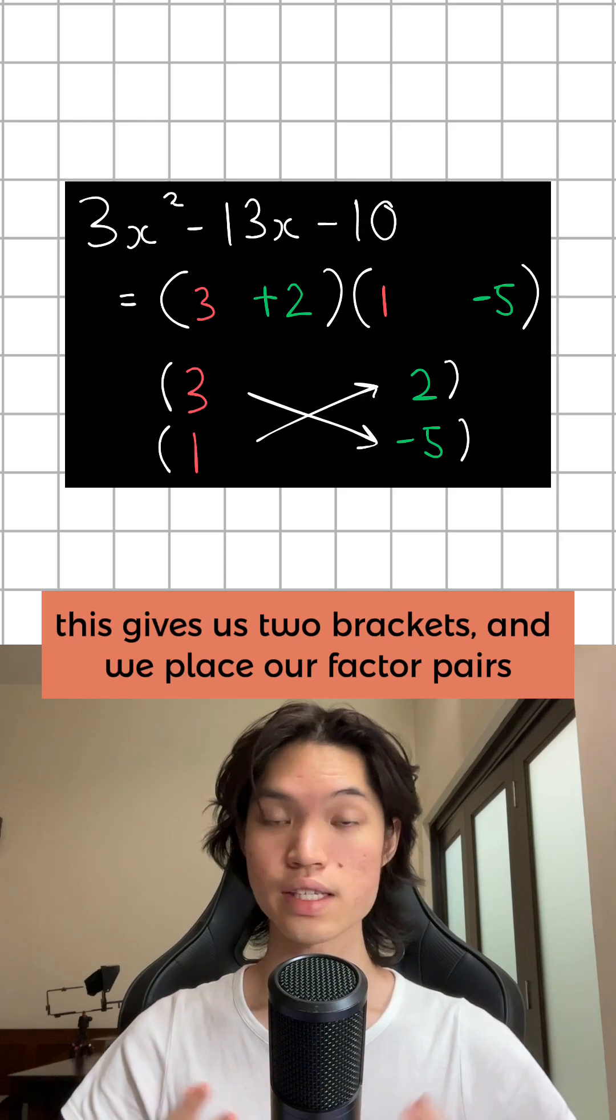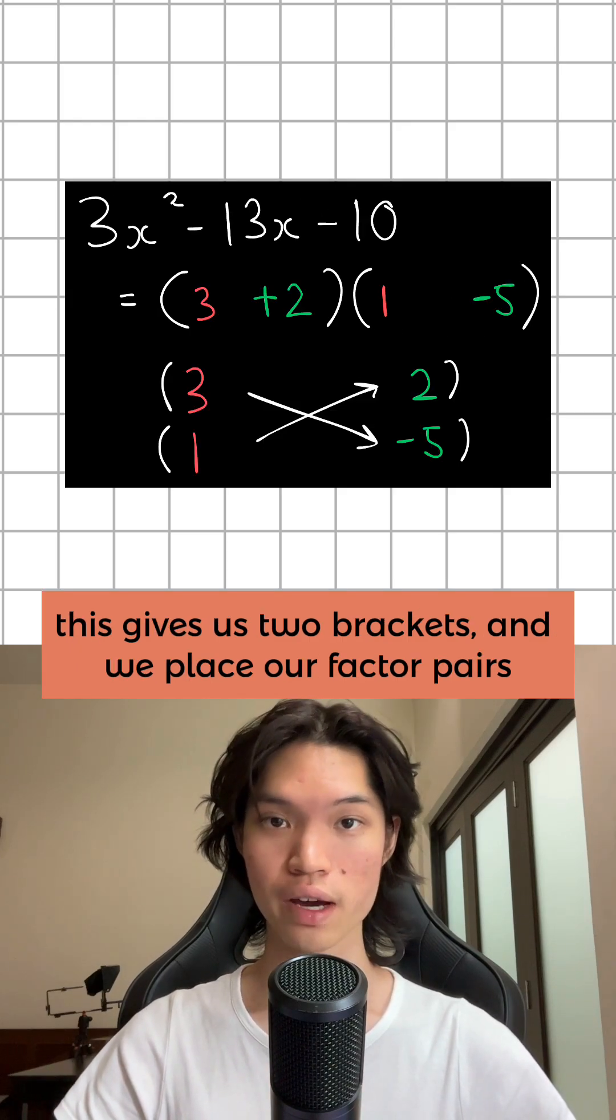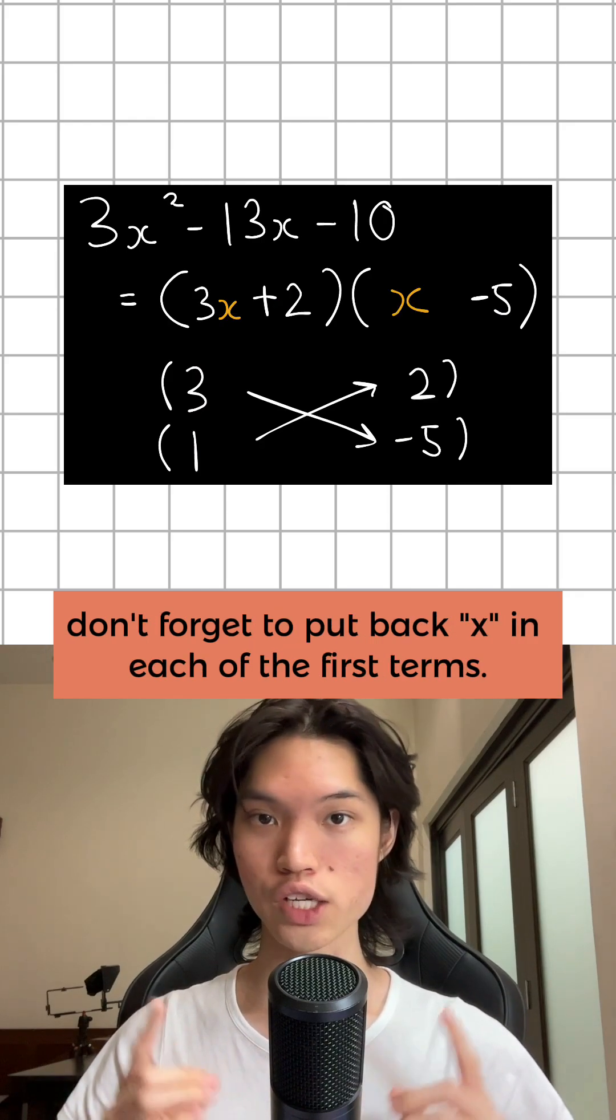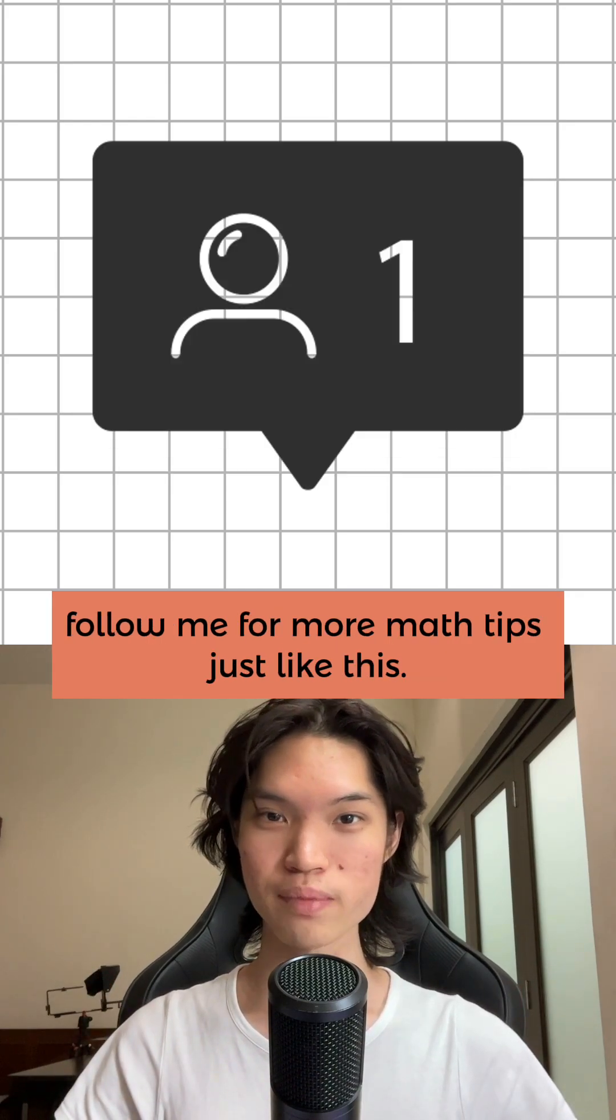Step 3 is to write out the answer. This gives us two brackets and we place our factor pairs according to the cross method we did earlier. Don't forget to put back x in each of the first terms. Follow me for more math tips just like this.